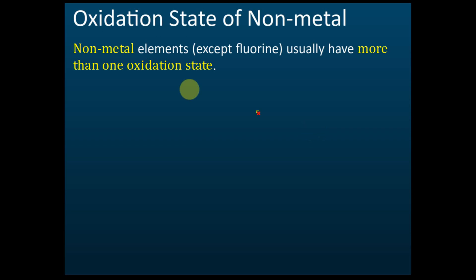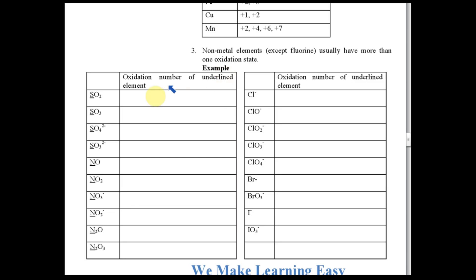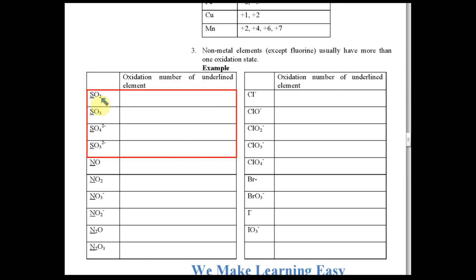So you need to do some calculations to find the oxidation state of the non-metal. For example, try to do the first four — tell the oxidation number of the underlined elements, which is the sulfur — and write your answer here.